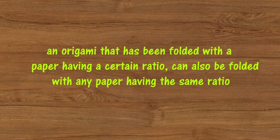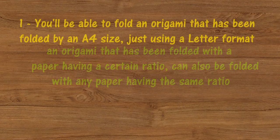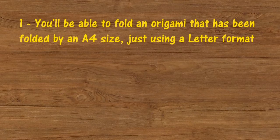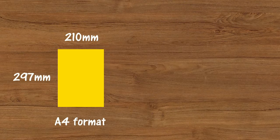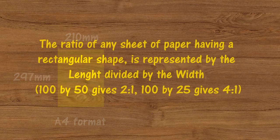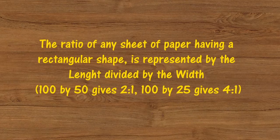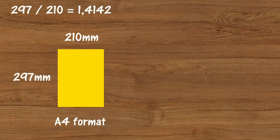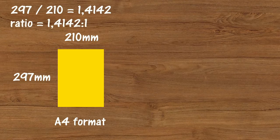Now we need to apply the concept of ratio to solve our first problem: to fold an origami that has been folded by an A4 size just using a letter format. Here we have an A4 format. Its length is 297 millimeters and the width is 210 millimeters. Applying the rule — ratio equals length divided by width — we get 297 divided by 210 equal to 1.4142. This means the ratio of the A4 is 1.4142 to 1.